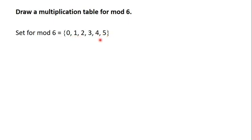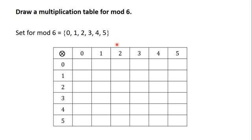After we have defined the set of values, the next thing we have to do is to use this set of values to draw the table. We have 6 values in total, so we are going to draw a table with 7 columns and 7 rows. In the first cell of the table, you write the sign of the operation — we are drawing a multiplication table, so you write the multiplication sign and draw a circle around it. Then you list the set of values in the first row and the first column, just as we have in this table. After you have drawn the table like this, you fill it out by performing the operation in the modulus.